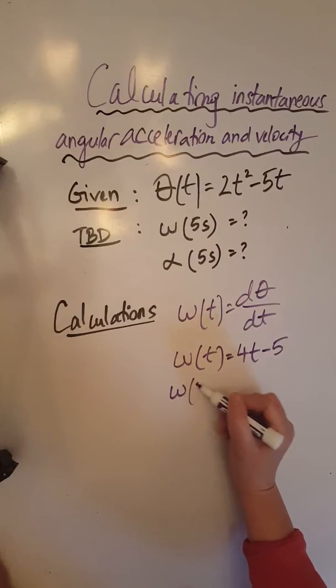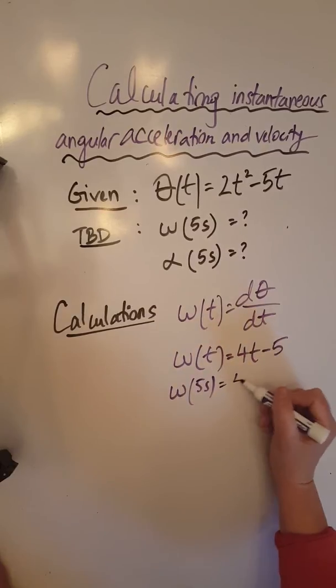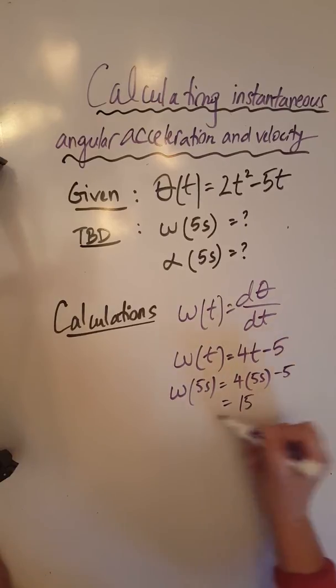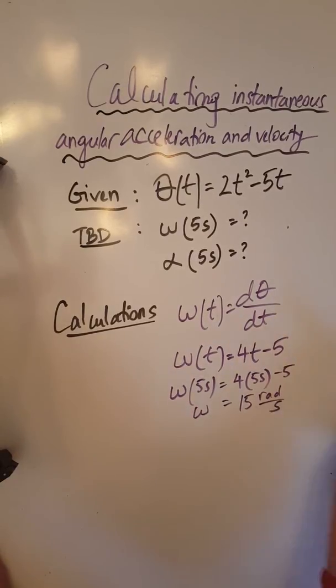So omega at 5 seconds is 4 times 5 seconds minus 5, which gives me 20 minus 5, which gives me 15 radians per second.